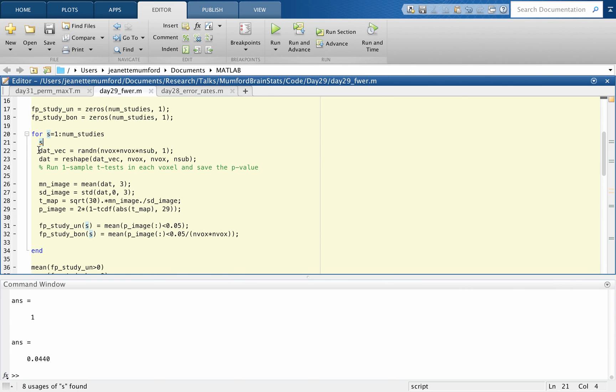So I'm going to go through each study, create the data with random normal noise, and then compute the t-statistic by taking the mean and the standard deviation. This is just the equation for one sample t-test, which is faster than using the t-test function. And then I compute the p-value. And then last, I'm just computing the false positive within each study. So if you take the mean of a 0-1 vector, that'll give me the proportion of voxels that were significant. And here I'm doing the same thing, but it's Bonferroni corrected, so I'm taking 0.05 and dividing by n-vox times n-vox.